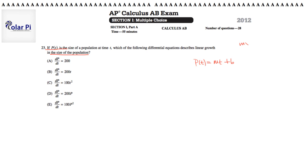Because if p of t, which is the size of the population at time t, could be modeled in the form mt plus b for some constants m and b, then it's clear that it represents linear growth.